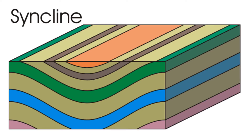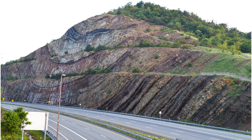A syncline is a trough formed from the folding of strata, which dipped down toward the middle. The youngest rocks occur in the middle of the syncline, inside of the trough. This specific syncline consists of sandstone, siltstone, mudstone, shale, conglomerate, and even coal strata, dating back to the Mississippian period of Earth history.